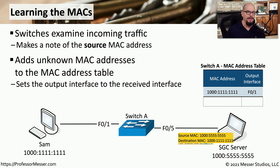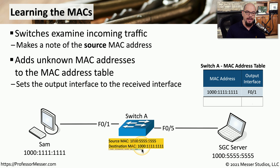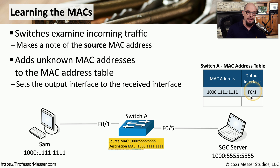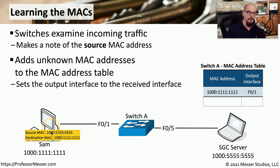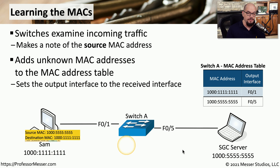Now let's see what happens when traffic goes the other direction. The SGC server sends information to SAM, so the destination MAC is 1000 in all 1s. When that frame hits the switch, it compares the destination MAC to its table and finds that address is on fast ethernet 0/1, then forwards the traffic to SAM. Since the SGC server's MAC was not yet in the table, the switch also adds it. Now any traffic destined for SAM or the SGC server will be properly switched.